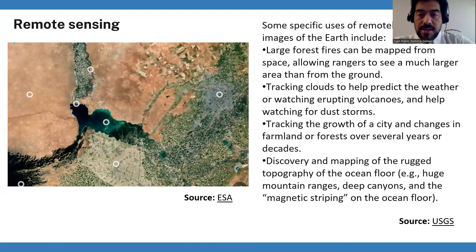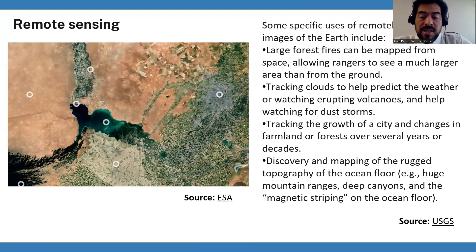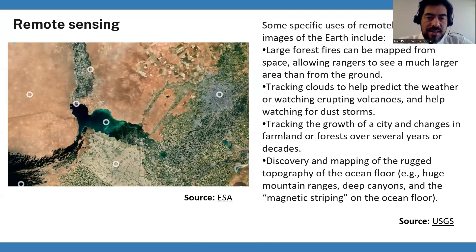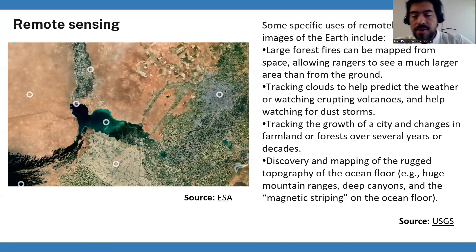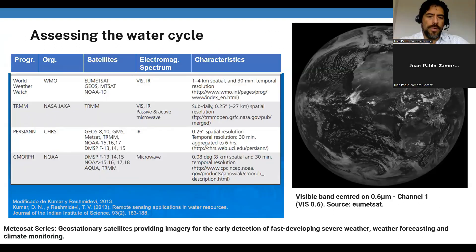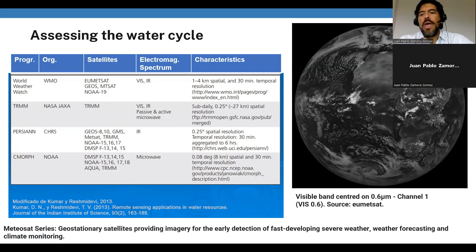For example, we can use remote sensing to monitor large forest fires, to track clouds and help predict the weather, to monitor the growth of a city or changes in agricultural surface through the years, and we can use satellite images to establish digital elevation models of the ocean floor and air terrain. We have mentioned sensors mounted on satellites, planes, drones, and ground-based platforms in order to monitor land cover regionally and globally.